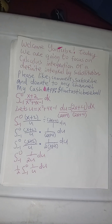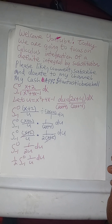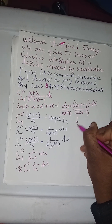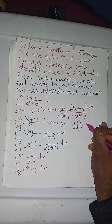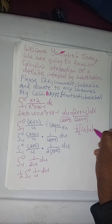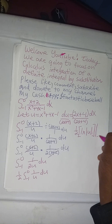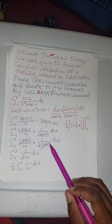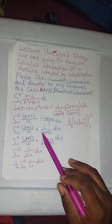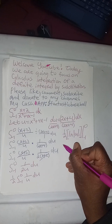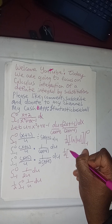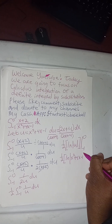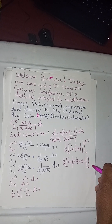The next step is to take the integration of 1 over u, du. That will yield one half times the natural log of the absolute value of u, evaluated from negative 1 to 0. Earlier in the problem we substituted u for x squared plus 4x minus 1, so we place this back. It becomes one half times the natural log of the absolute value of x squared plus 4x minus 1, from negative 1 to 0.